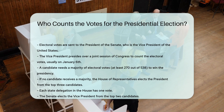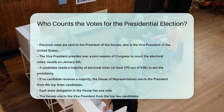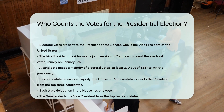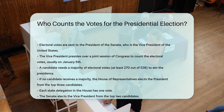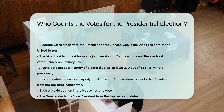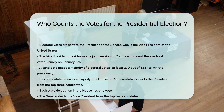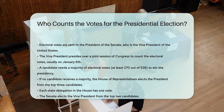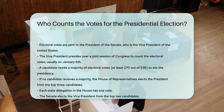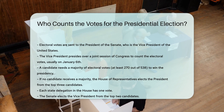If no candidate receives a majority, the House of Representatives elects the president from the top three candidates, with each state delegation in the House having one vote. The Senate elects the vice president from the top two candidates.